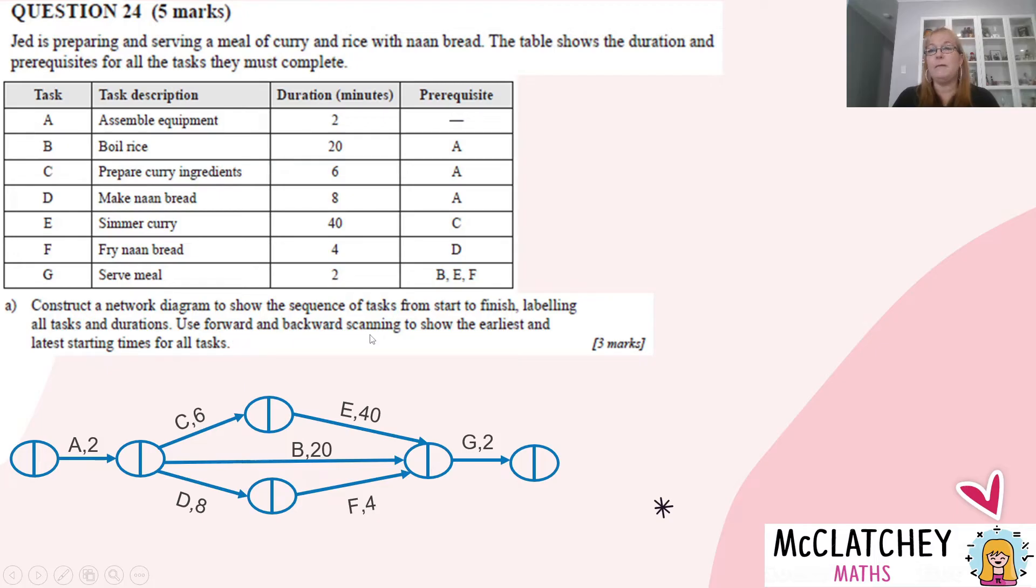Next step we have to do is forward and backward scan through the network. But we get our first mark here. Even if we haven't done the forward and the backward scanning, we've correctly constructed that network diagram. We've shown the appropriate sequence for all the tasks. So we get our first mark and our second mark because we've labeled all the tasks and durations on the diagram. So yay us, we're two out of five. Let's keep going.